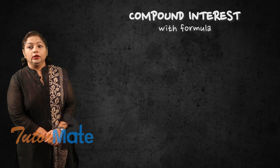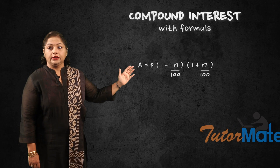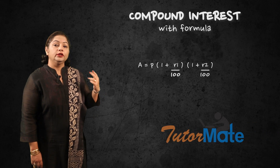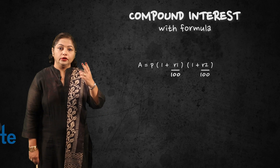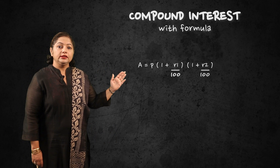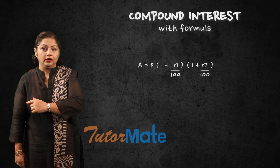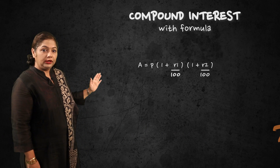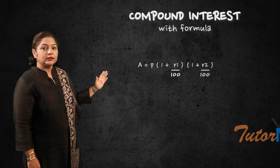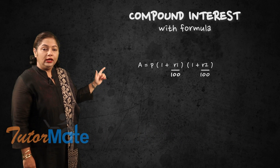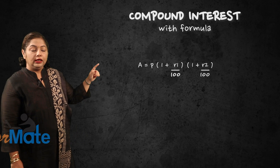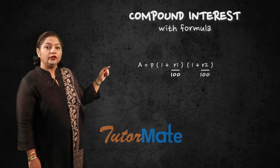Now we will see the calculation of amount with different rates. What do we mean by different rates? If compound interest is to be calculated for 2 years and the rate is different — for example, for the first year it is 10 percent and for the second year it is 8 percent — then how do we write the formula? We write A equals P, where P comes only once, into bracket 1 plus R1 upon 100. R1 is the rate for the first year. Then immediately the second bracket: 1 plus R2 upon 100. R2 is the rate for the second year.